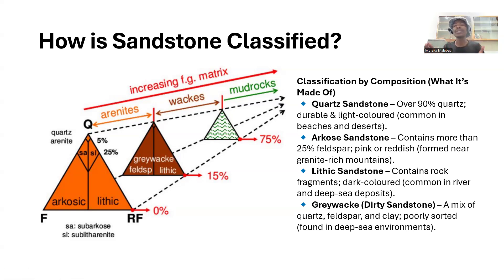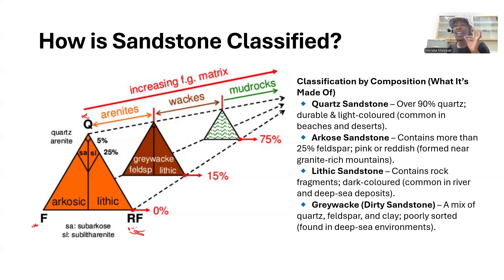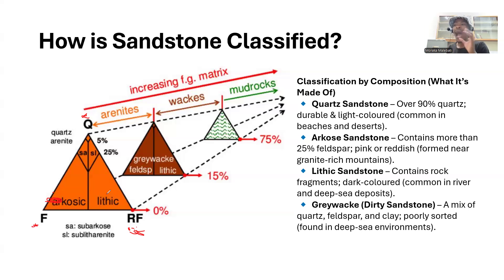On the QFL classification diagram, quartz is at one corner, feldspar at another, and lithic fragments at the third. A feldspar-rich sandstone that falls within the feldspar corner is called an arkose. A lithic sandstone will be called a lithic arenite.